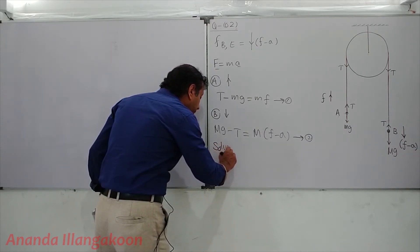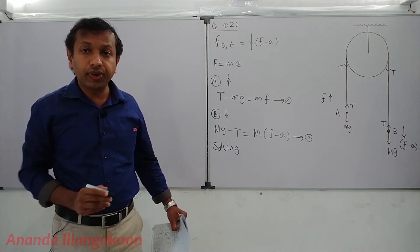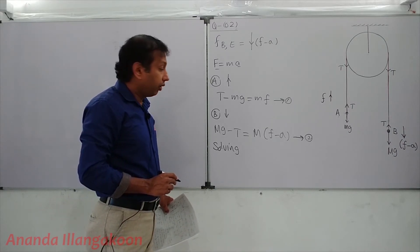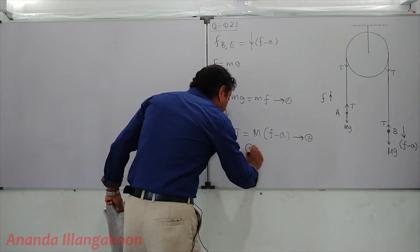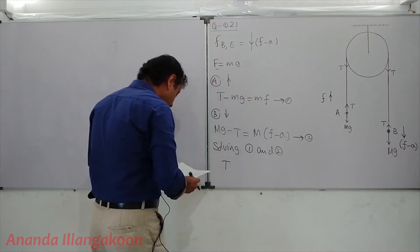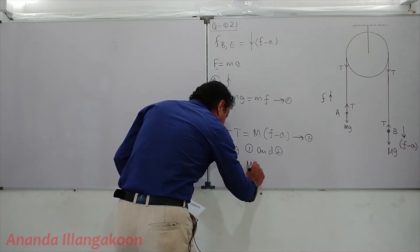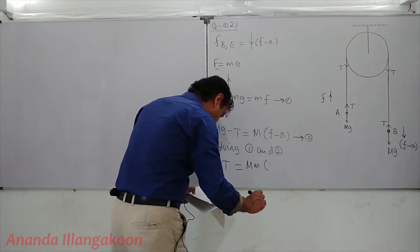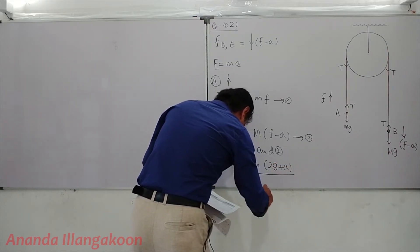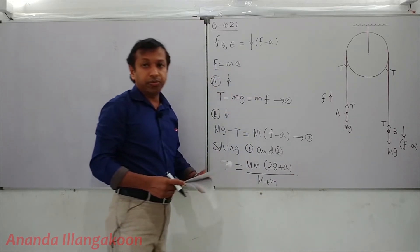Applying Newton's second law: for child A moving upward, T minus mg equals m times F. For child B moving downward with acceleration F minus A, Mg minus T equals M times (F minus A). Solving these two simultaneous equations to eliminate F, we get the tension T equals capital M times (2G plus A) divided by (capital M plus small m).